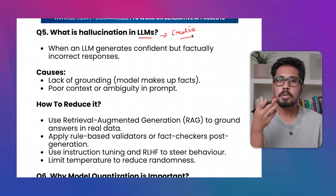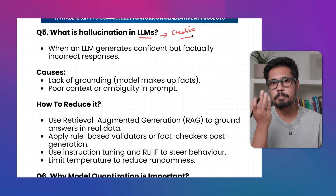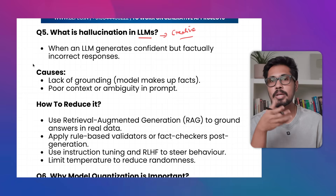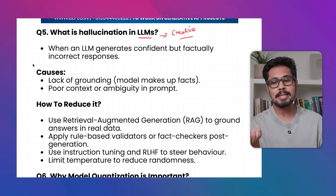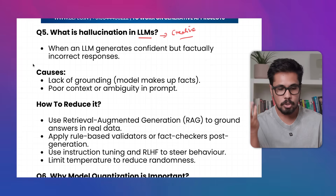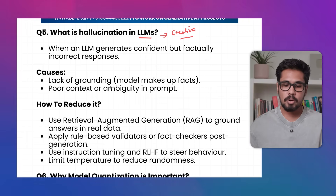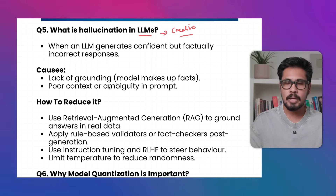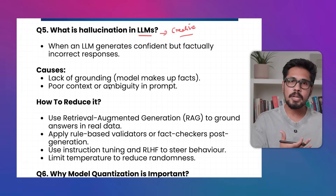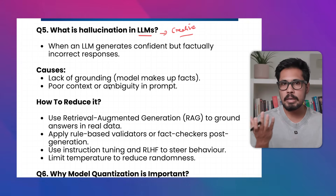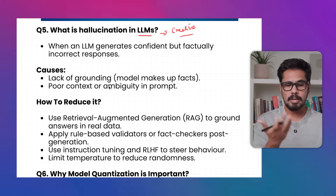Why do they hallucinate? It depends on the size of your LLM model — if the size is smaller, the chance of hallucination is higher. As size increases and more context is learned, hallucination levels drop. Other causes include lack of grounding or facts fed during training, and poor context or ambiguity in the prompt you provide.